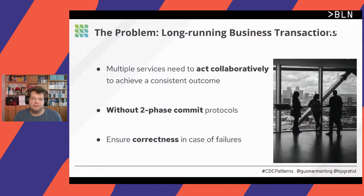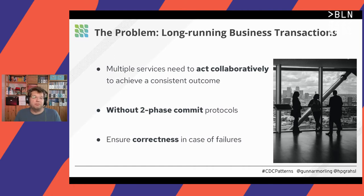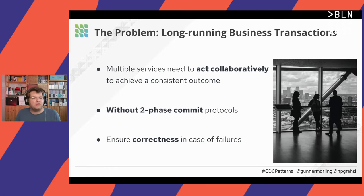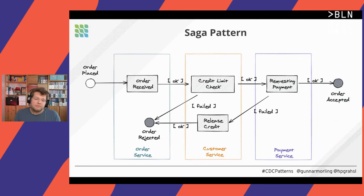If we move to microservices from a monolith, we'd like to avoid requiring multiple services to interact to achieve one consistent outcome. But sometimes there's no way around it — no matter how carefully you design your domain, there will be cases where multiple services need to collaborate. So we have these long-running business transactions. The problem is we typically don't have XA two-phase commit protocols in a microservices world, and we still need to think carefully about failure cases.